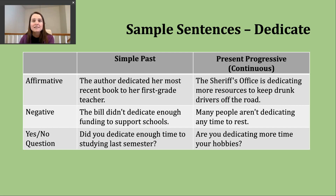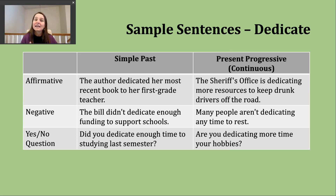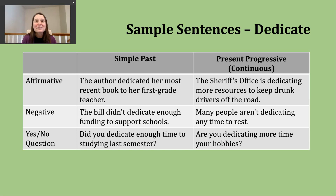For a negative present progressive sentence, the structure is: subject + form of 'be' + 'not' + '-ing' form of the verb. Example: 'Many people aren't dedicating any time to rest.' This mirrors a statement from a doctor discussing how a lack of sleep and rest can negatively impact our health and day-to-day performance.